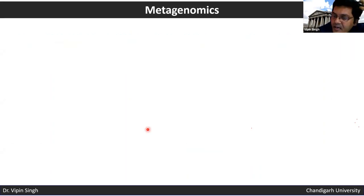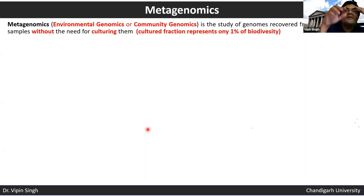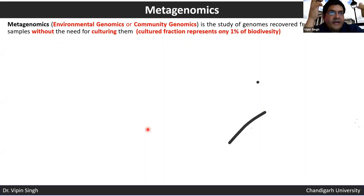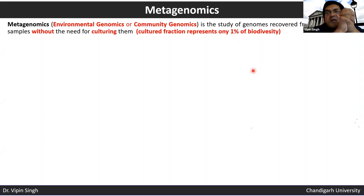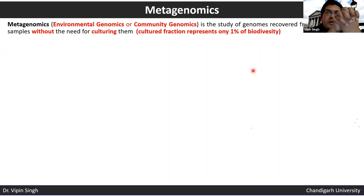One important application facilitated by NGS is metagenomics, also known as community genomics or environmental genomics, where you can study the entire microbial content of a given sample without any loss of biodiversity. Previously, to identify biodiversity in soil you would take a soil sample, grow a culture, and then sequence DNA from recovered bacteria.